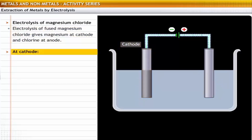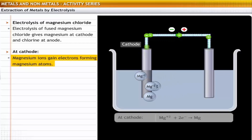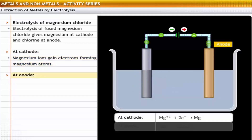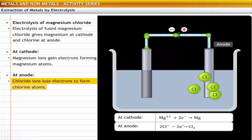Magnesium ions gain electrons, forming magnesium atoms. During the reaction at the anode, chloride ions get oxidized due to loss of electrons. Thus, chloride ions lose electrons to form chlorine atoms.